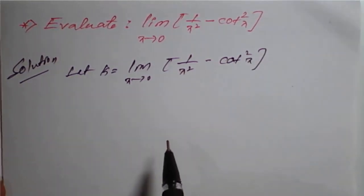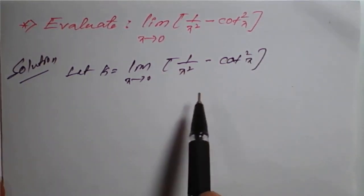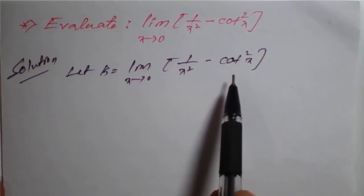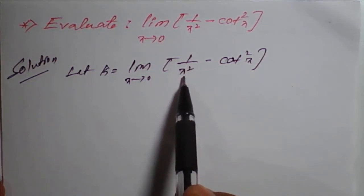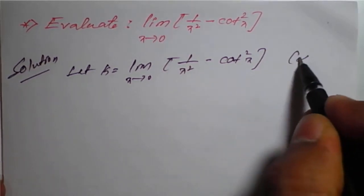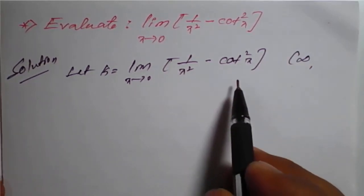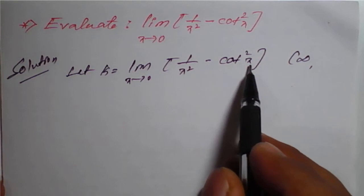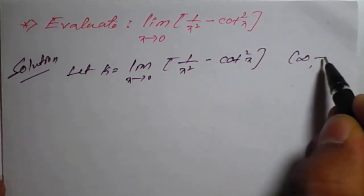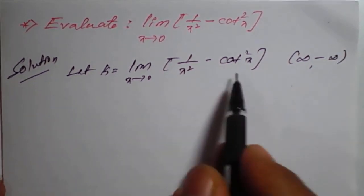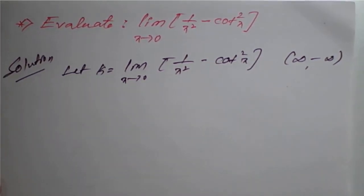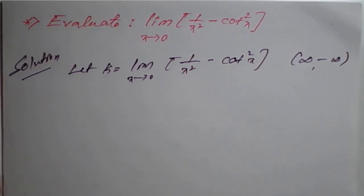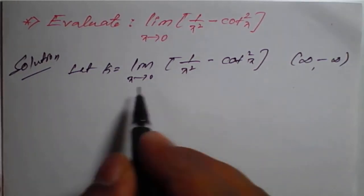First we will see which form results if we apply x equal to 0. We can see that 1 upon 0 is infinity, and tan of 0 is also infinity, so it is infinity minus infinity form. We need to convert this situation either into infinity by infinity form or 0 by 0 form.